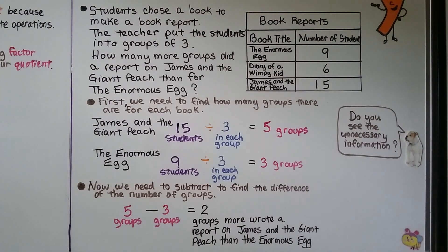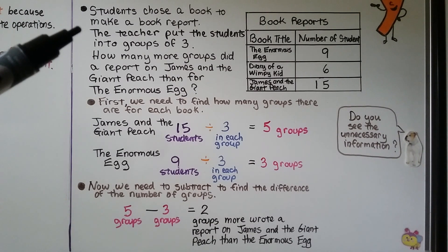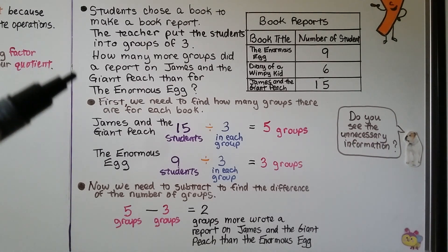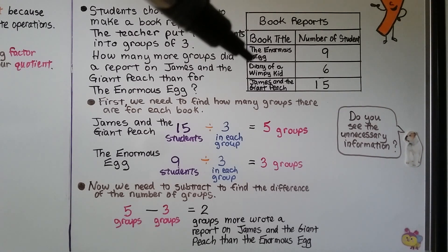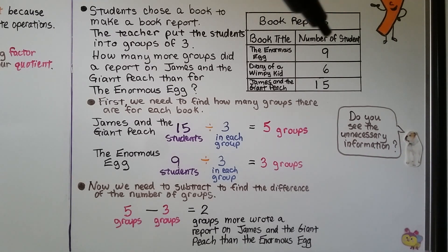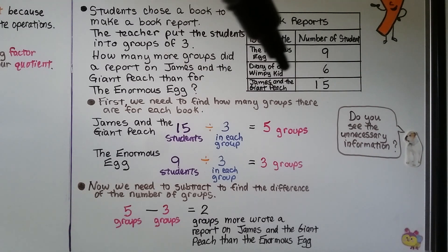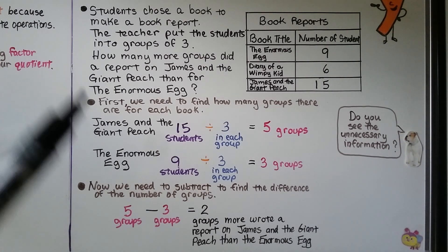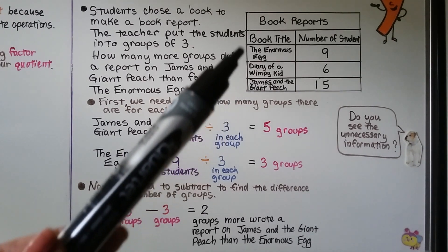We're going to finish this lesson with a word problem that involves using information from a table. It says students chose a book to make a book report, and the teacher put the students into groups of 3. How many more groups did a report on James and the Giant Peach than for the Enormous Egg? Our table shows: The Enormous Egg had 9 students, Diary of a Wimpy Kid had 6 students, and James and the Giant Peach had 15 students.